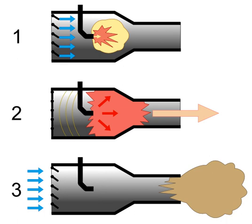A pulsejet engine is a type of jet engine in which combustion occurs in pulses. A pulsejet engine can be made with few or no moving parts, and is capable of running statically — it does not need to have air forced into its inlet typically by forward motion. Pulsejet engines are a lightweight form of jet propulsion, but usually have a poor compression ratio, and hence give a low specific impulse.